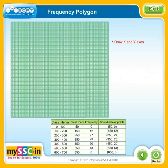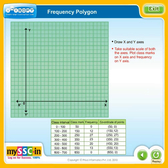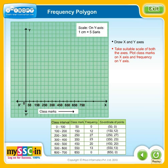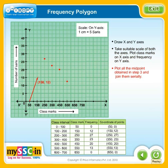Draw X and Y axes. Take a suitable scale for both axes. Plot class marks on the X axis and frequency on the Y axis. Plot all the midpoints obtained in the previous step and join them serially.